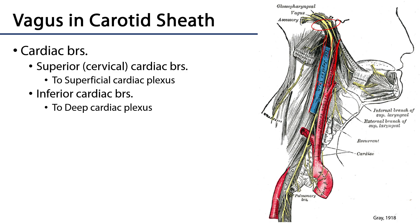As the vagus descends the cervical region, it's going to give off two sets of cardiac branches to the autonomics of the thorax: superior cardiac branches, which come off quite high and intermingle with branches from the superior cervical ganglion of the sympathetic trunk, as well as inferior cardiac branches that are more distal in the cervical region. There are of course other branches of the vagus throughout the neck, but none that are relevant to the thorax.